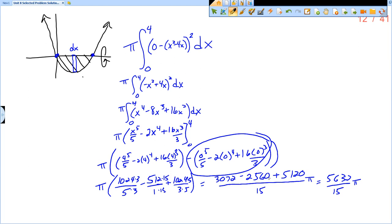Oh, sorry. This was not 2560. This should have been 7680 because I didn't multiply the 512 by 15. I apologize. So we've got 3072 minus the 7680 and then plus the 5120. And so I end up with this would be 512 fifteenths times pi. I apologize.